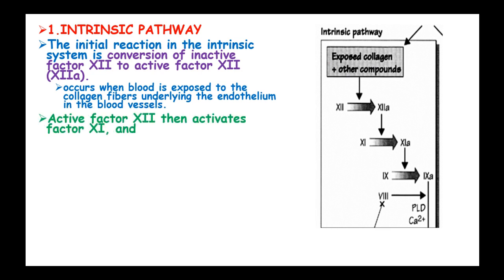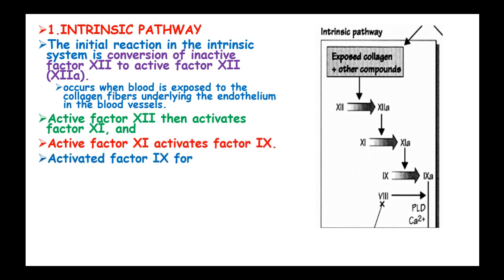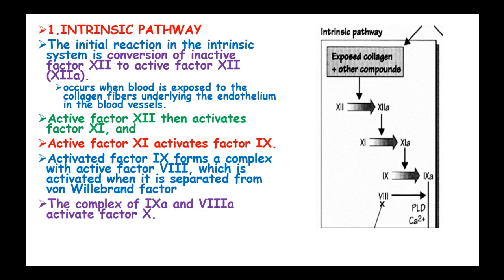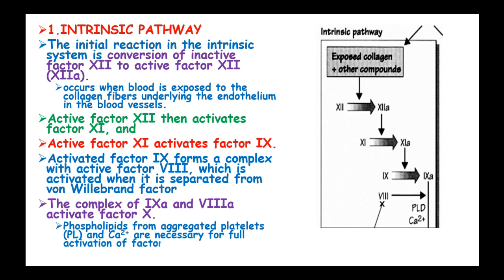Active factor XII then activates factor XI, and active factor XI activates factor IX. Activated factor IX forms a complex with active factor VIII, which is activated when it is separated from the von Willebrand factor. The complex of factor IX and activated factor VIII then activates factor X. Phospholipids from aggregated platelets and calcium ions are needed for full activation of factor X.